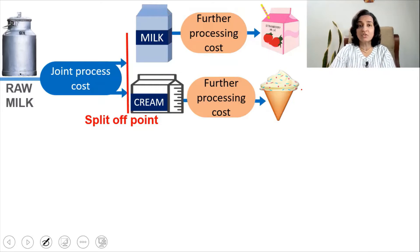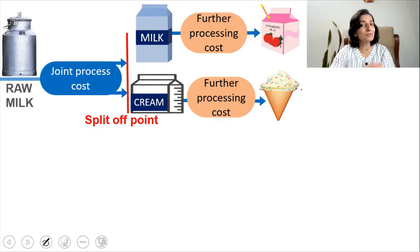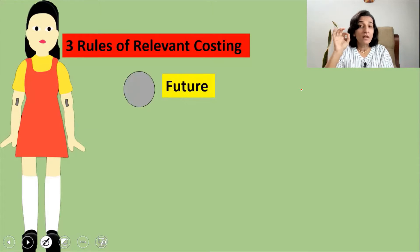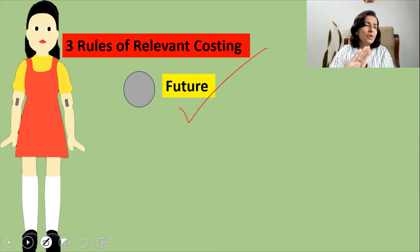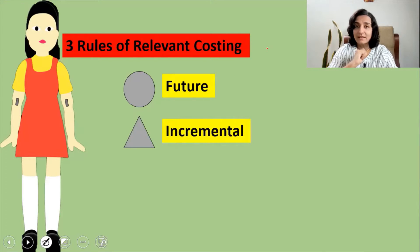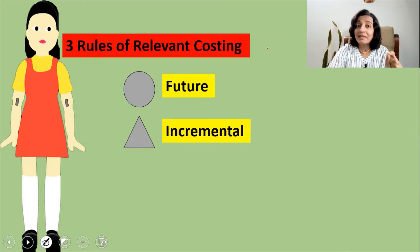Whenever we are taking a decision, it is the relevant costing techniques that have to be applied. Do you recollect the three basic features of relevant costs? Even if you don't remember, don't worry — I will walk you through the three features, which will form the three basic rules of our mock game. The first rule is: relevant costs are those costs which are related to the future, meaning that if a cost has been incurred in the past, we should not include it for decision making. The second rule is that it should be incremental — that is, additional.